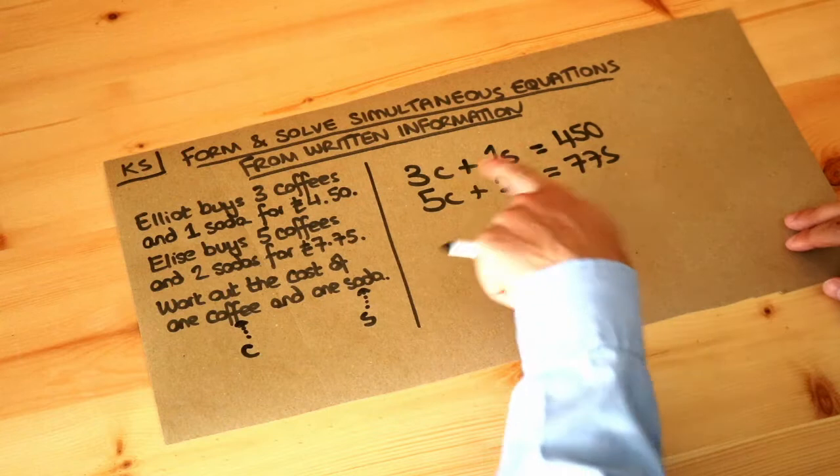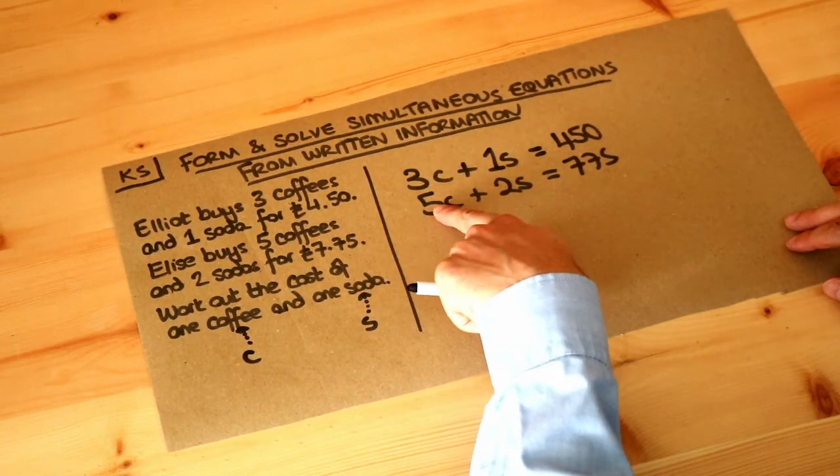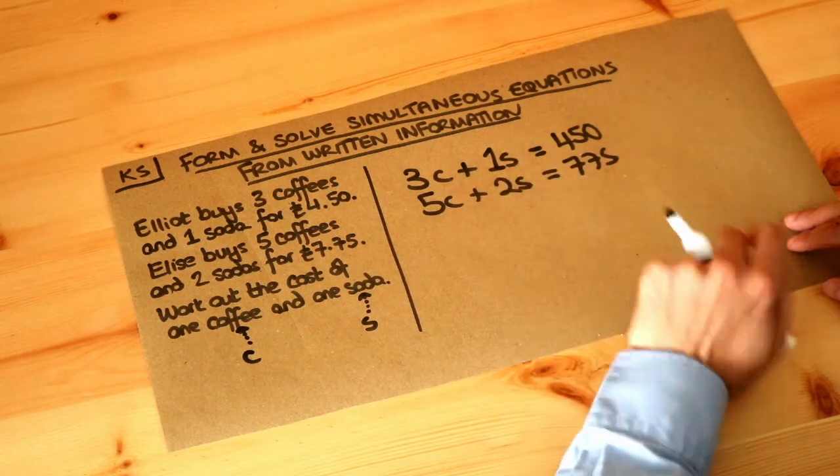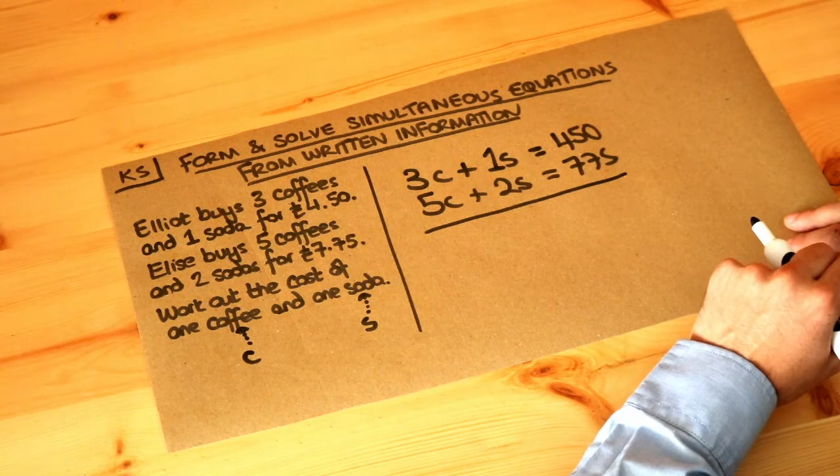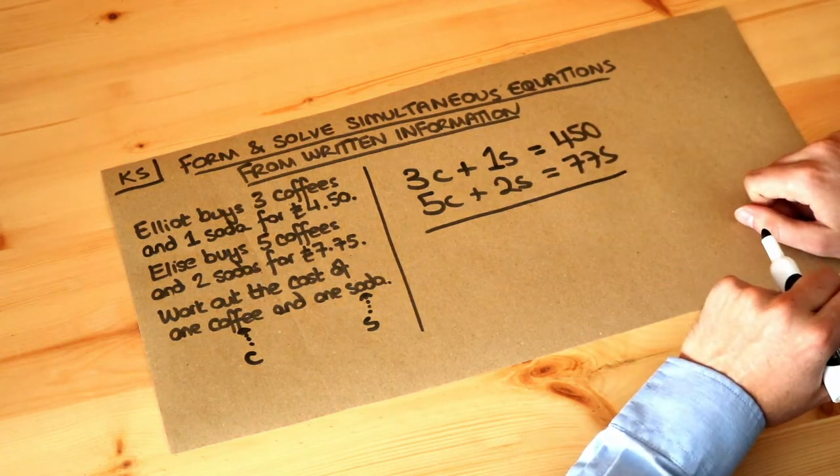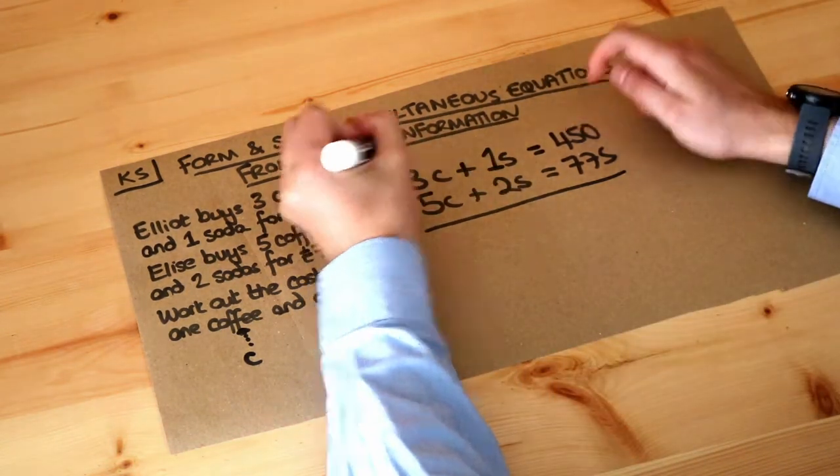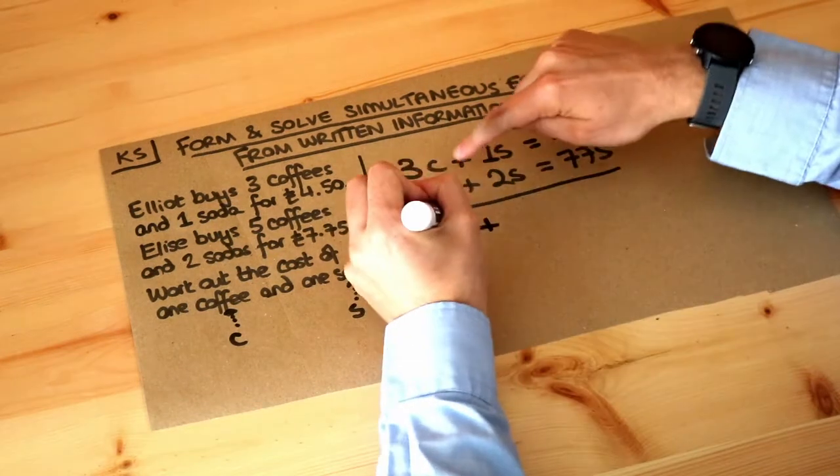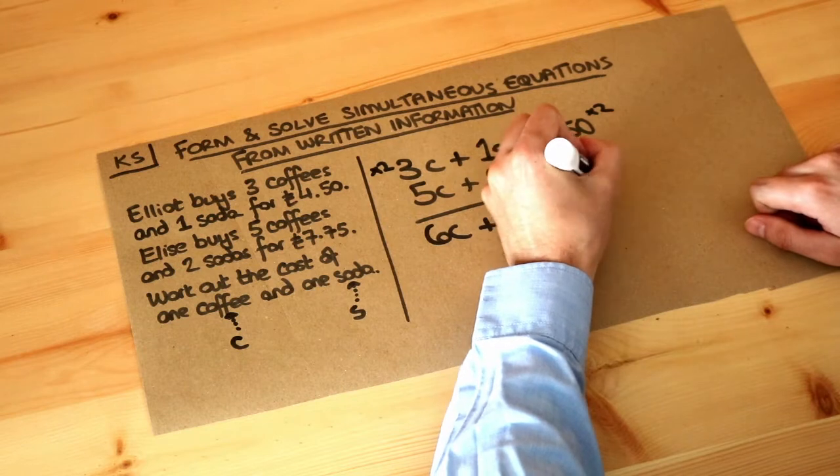The way we do this is to get the coefficients of c the same, or the coefficients of s the same. I'm going to make the coefficients of s the same. The lowest common multiple of 1 and 2 is 2, so I'll double the first equation. If I times this equation by 2, I get 6c plus 2s equals 900.